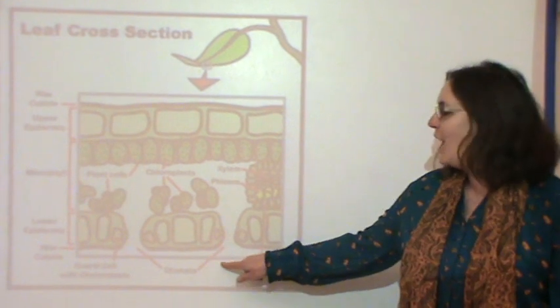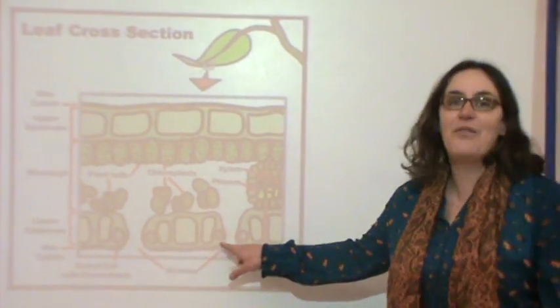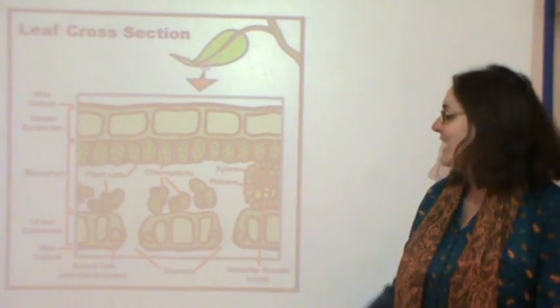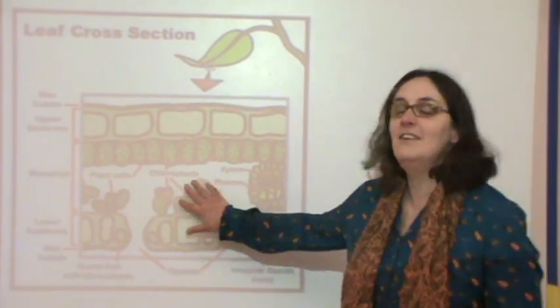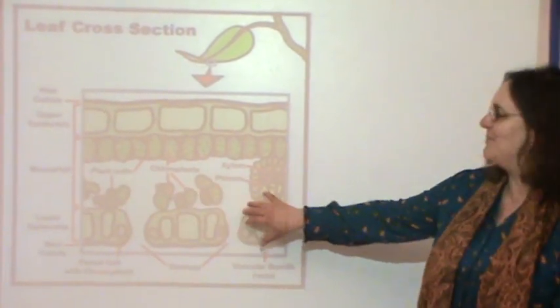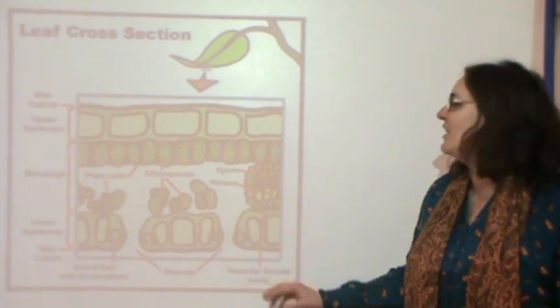Stomata are on the base and they let the gases into place. Then the spongy mesophyll lets the gases further still.